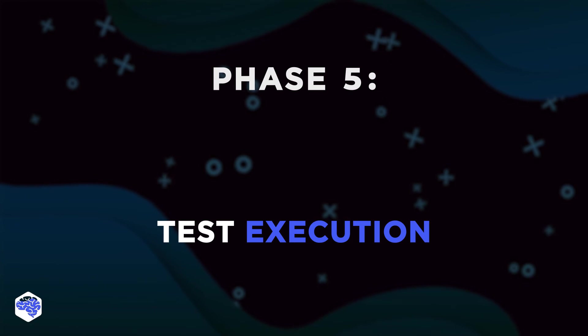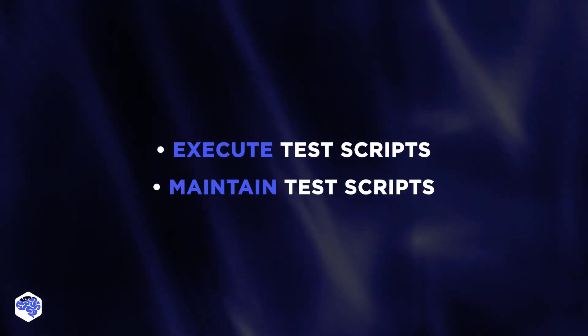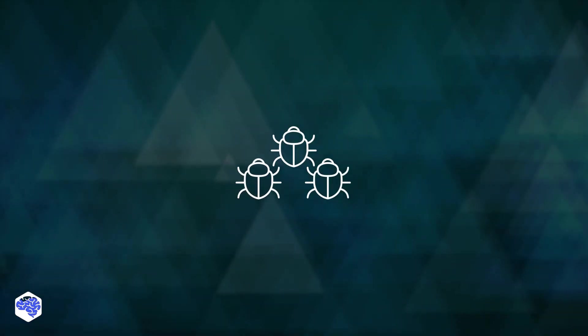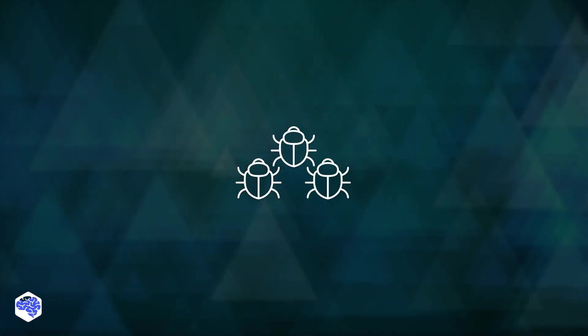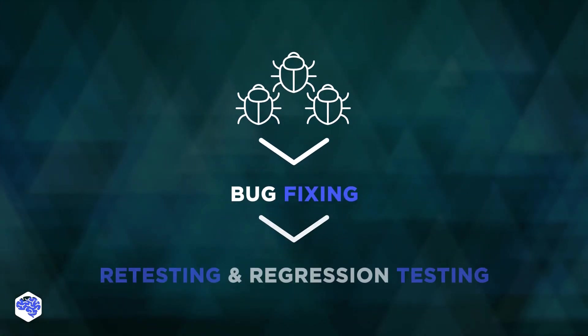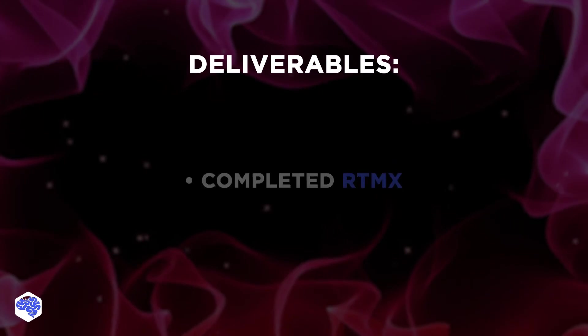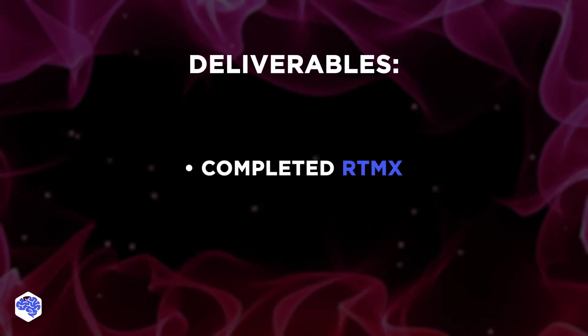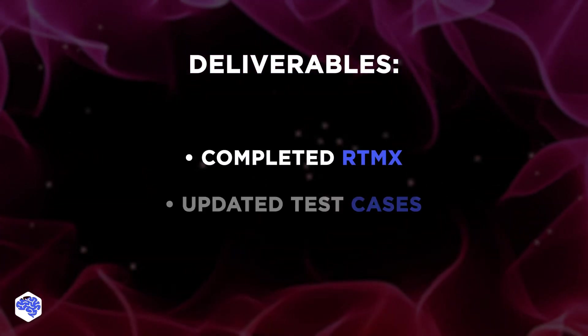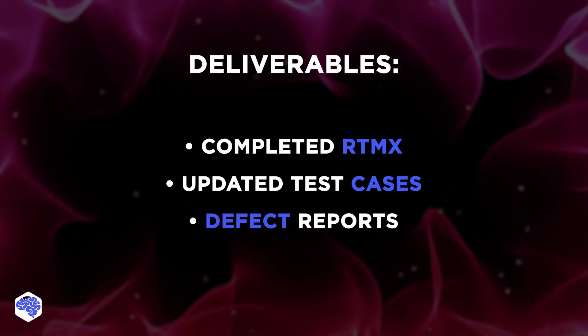Phase 5: Test Execution. Testers carry out test script execution, test script maintenance, and bug reporting. In case of bugs, the build is moved back to the development team. After bug fixing, we carry out regression testing. Deliverables of test execution are a completed RTM with execution status, updated test cases, and defect reports.